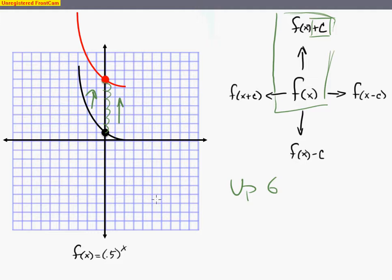So that means I'm going to add 6 to my f of x. So I take my f of x again, which is my same equation as before, f of x equals 0.5 to the x. And in order to get my new equation, I'm going to have to add my 6 to that equation. And then now I have the equation of the new line.